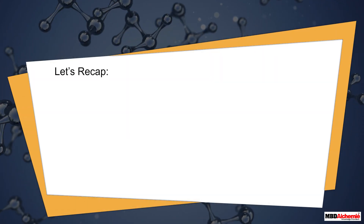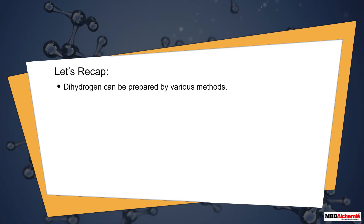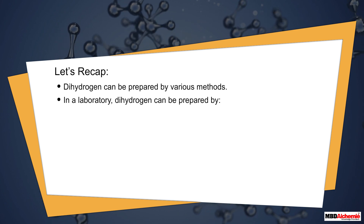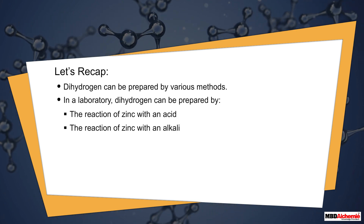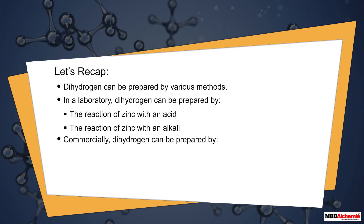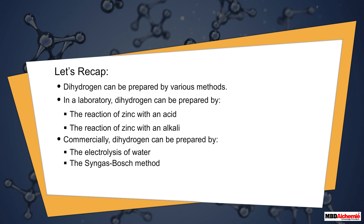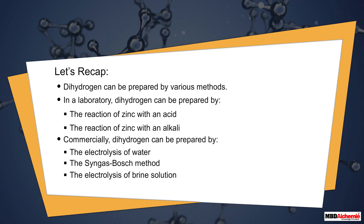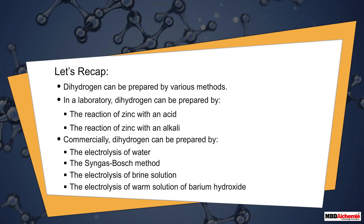To recap: dihydrogen can be prepared by various methods. In a laboratory, it can be prepared by the reaction of zinc with an acid, or the reaction of zinc with an alkali. Commercially, it can be prepared by the electrolysis of water, the Singa's Bosch method, the electrolysis of brine solution, or the electrolysis of a warm solution of barium hydroxide.